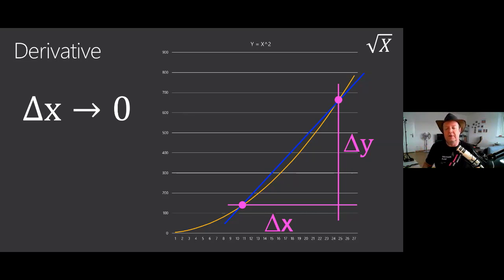And that's how it's going to look like. So when this delta X is equal to zero, the slope is going to kiss, this blue line is going to kiss the orange line perfectly. And then we are going to be able to calculate the slope at this particular point.